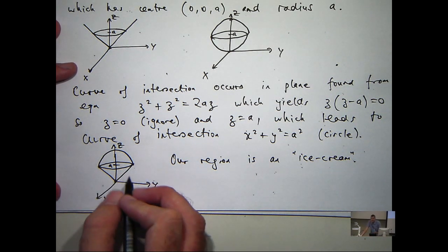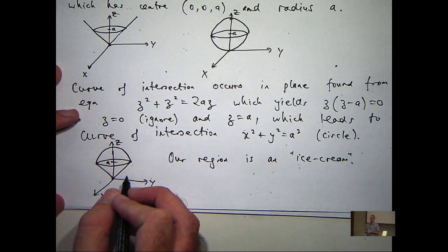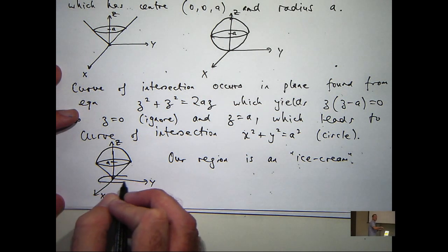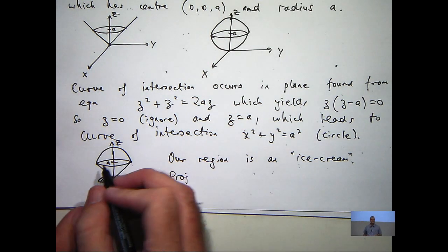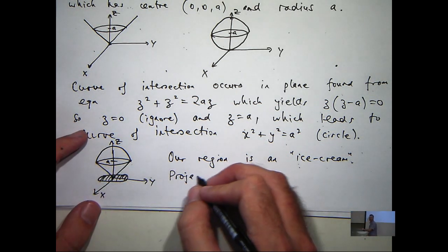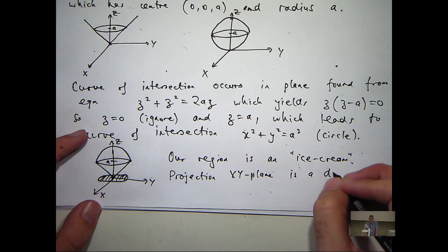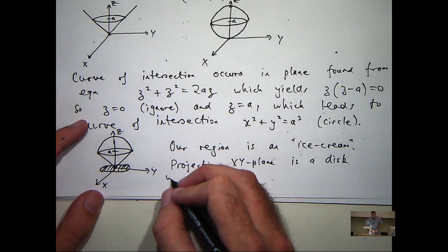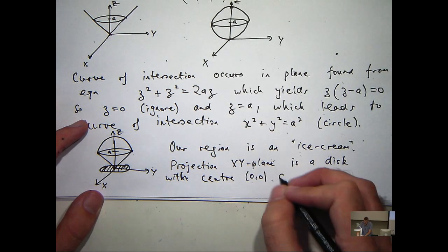Yeah, so we've got this circle. That's the widest sort of the widest part of the solid. So if you just look at the shadow in the xy plane, it's just bounded by this circle, but you want to fill it in. So it's a disk with center at the origin and radius a.